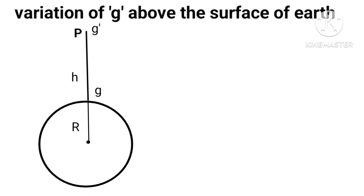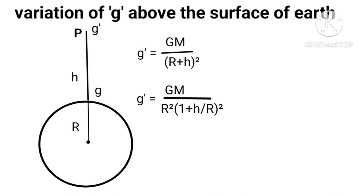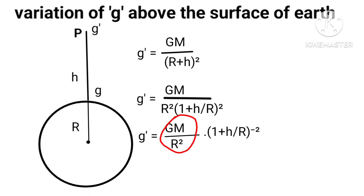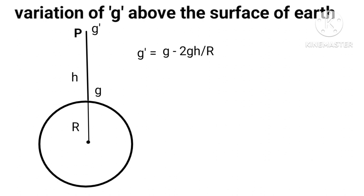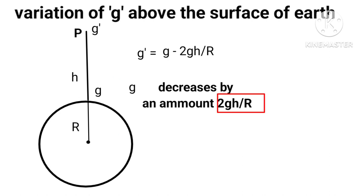Hence, g dash equals GM upon (R plus h) squared. This can be written as g dash equals GM upon R squared times 1 upon (1 plus h upon R) squared. Replacing GM upon R squared with g, and applying the binomial theorem, we get g dash equals g times (1 minus 2h upon R). So when we move up from the surface, acceleration due to gravity decreases by an amount 2gh upon R.